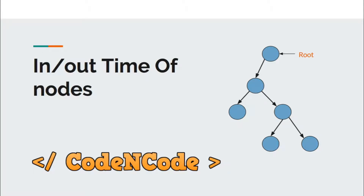Hello guys, this is Code and Code, and this is another lecture of this graph theory series. In this lecture we are going to study about the in/out times of nodes. This is not a very fancy concept, but it is important to have an introduction to before studying articulation points and bridges. It also helps in flattening of trees, after which you can apply algorithms to process queries very quickly.